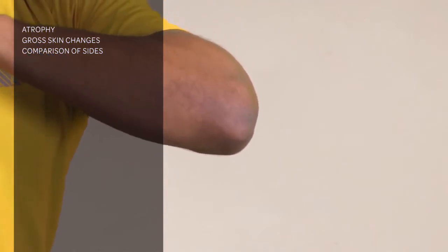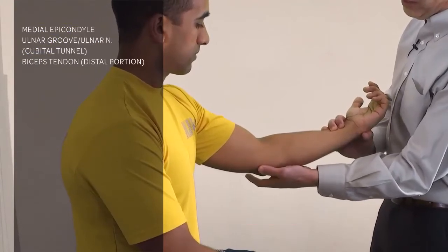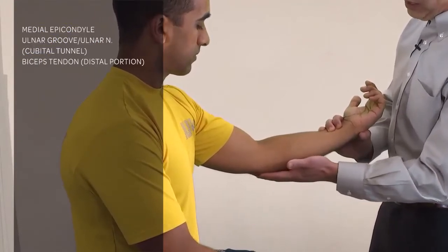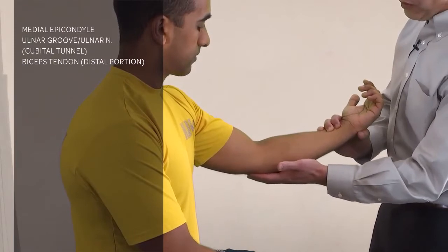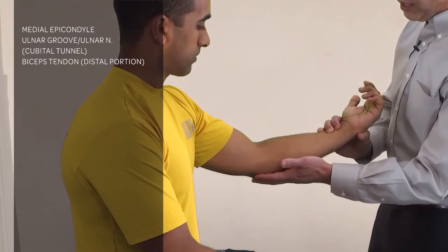After inspection we do palpation. Palpation is purposeful. On the medial aspect we're feeling the medial epicondyle, the ulnar groove where the ulnar nerve comes in, sometimes called the cubital tunnel area, and you're feeling for any tenderness there.